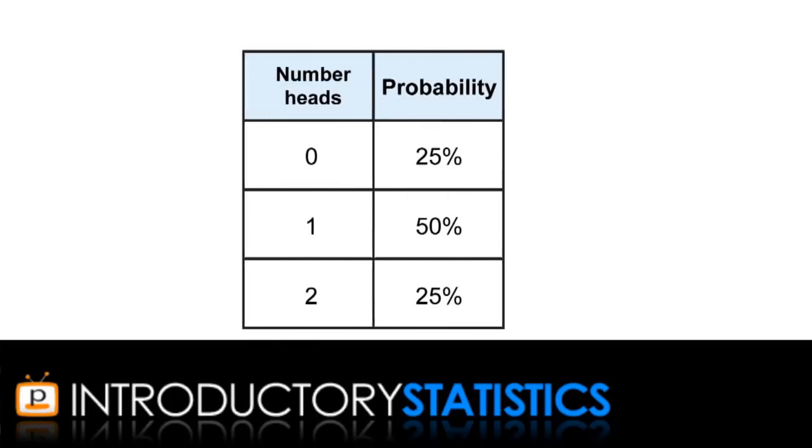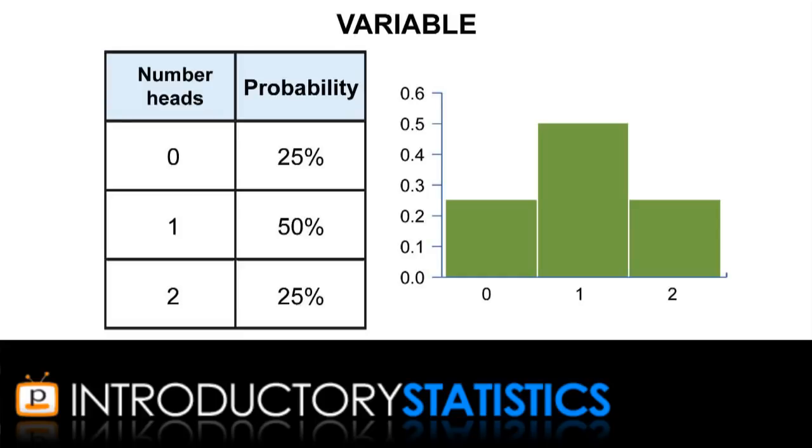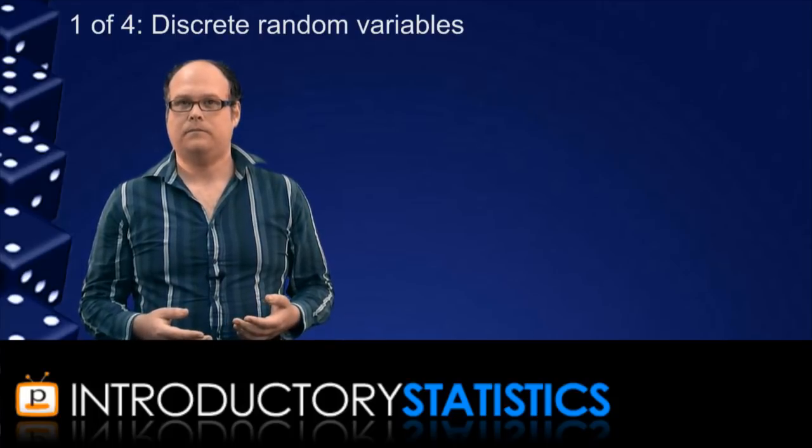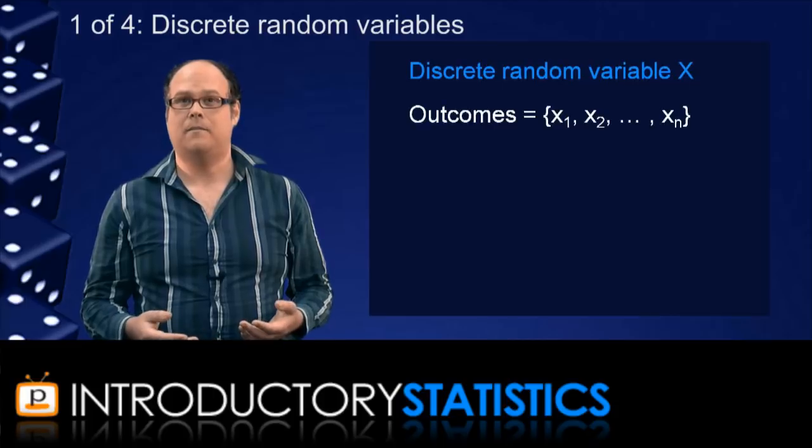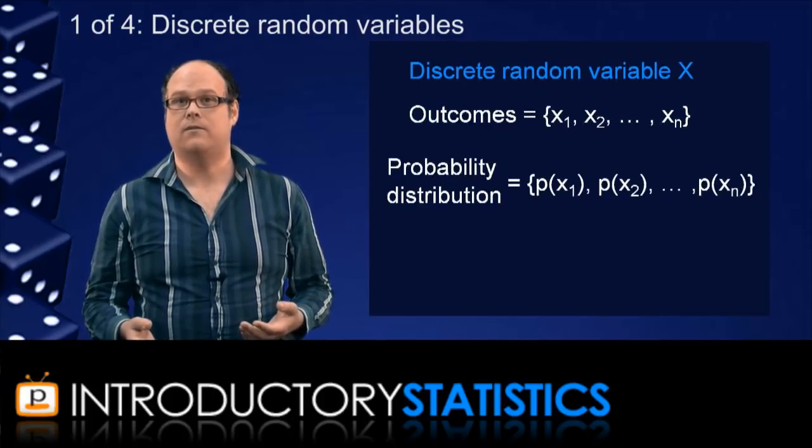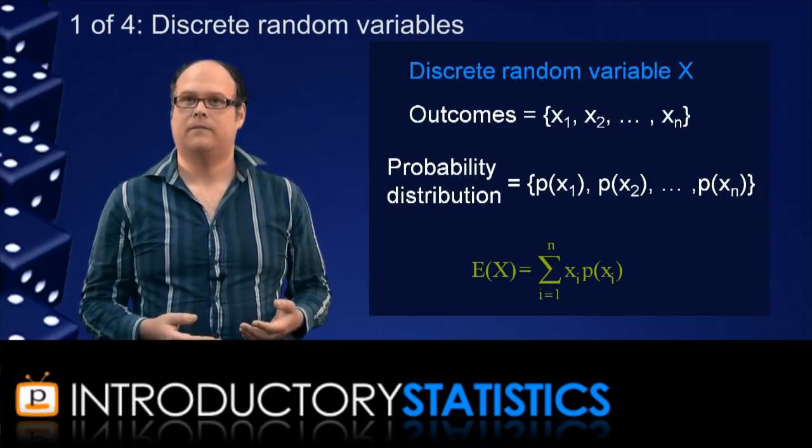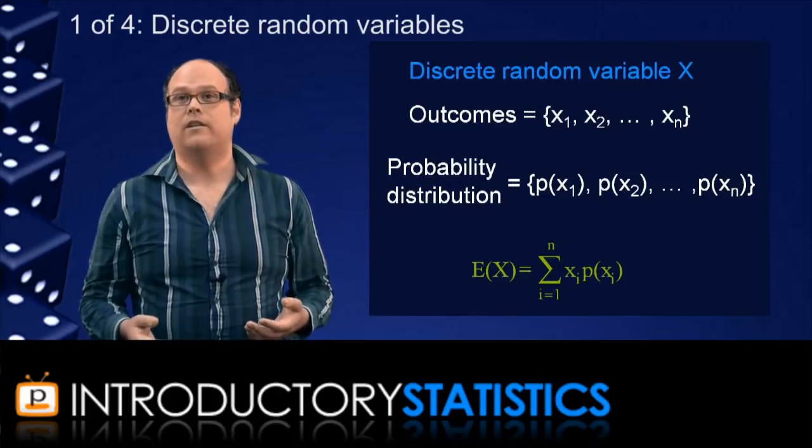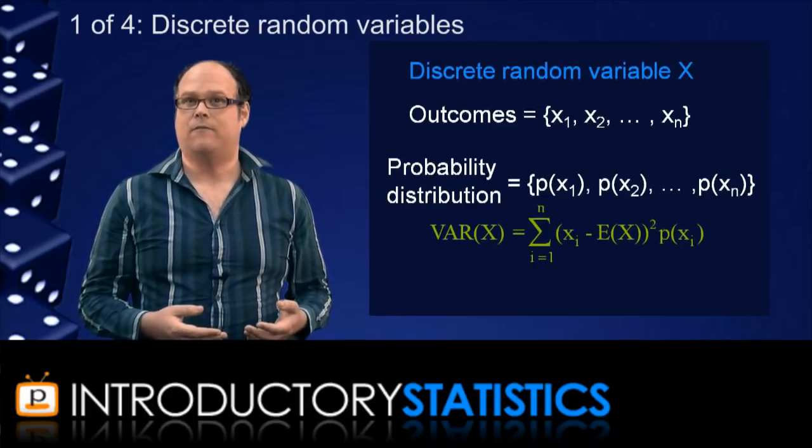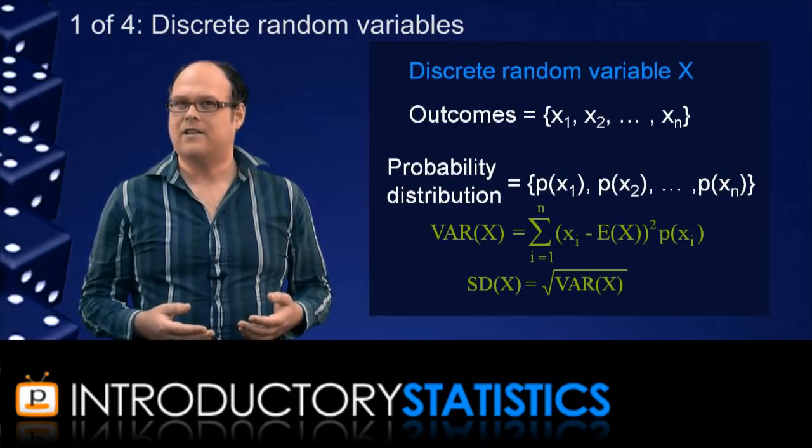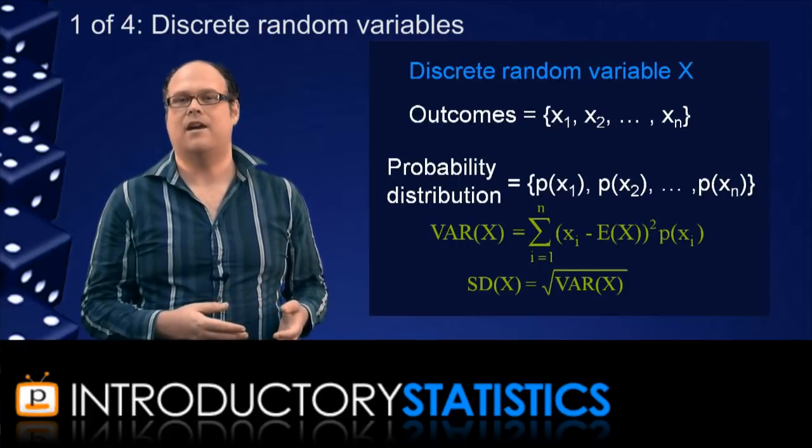We can also draw what is called a probability histogram, which is analogous to a data histogram, except that instead of reflecting what the variable did, it reflects the probabilities of what the variable can do. We can also, like we do with data, measure the random variable. If we have a discrete random variable x with a bunch of outcomes and a probability distribution giving probabilities to all those outcomes, then the expected value of x is given by this formula. The expected value is like the mean, and in fact we often call it the mean of x. The variance of x is given by this formula and the standard deviation is the square root of the variance. Not surprisingly, the variance and standard deviation are analogous to their counterparts in data measurement.